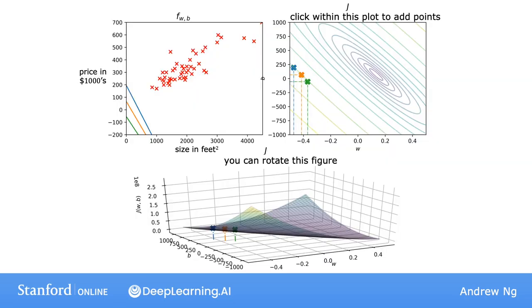At the bottom of this slide is a 3D surface plot of the cost function j. I know it doesn't look very bowl-shaped, but it is actually a bowl just very stretched out, which is why it looks like that.